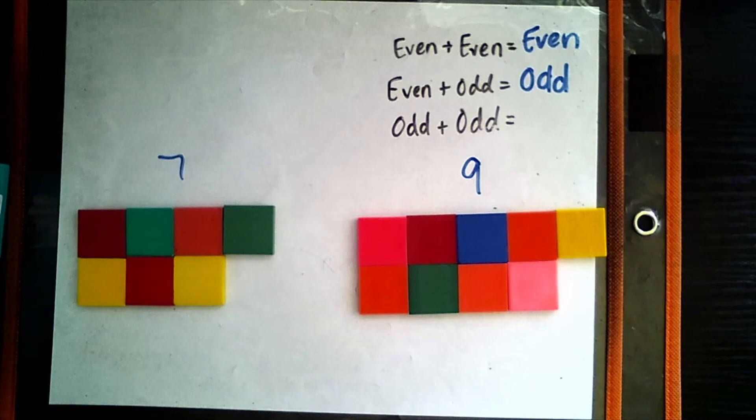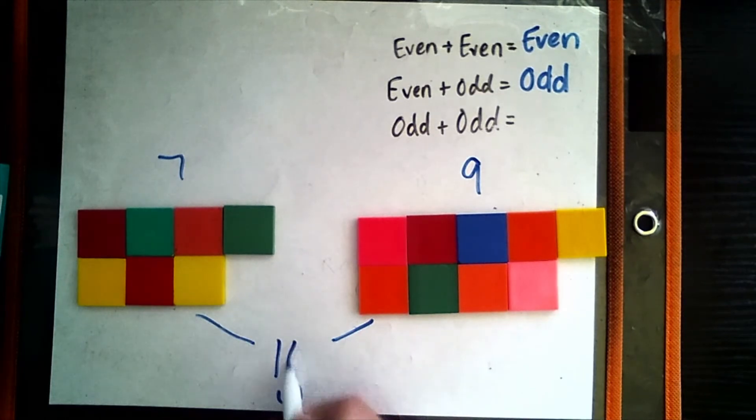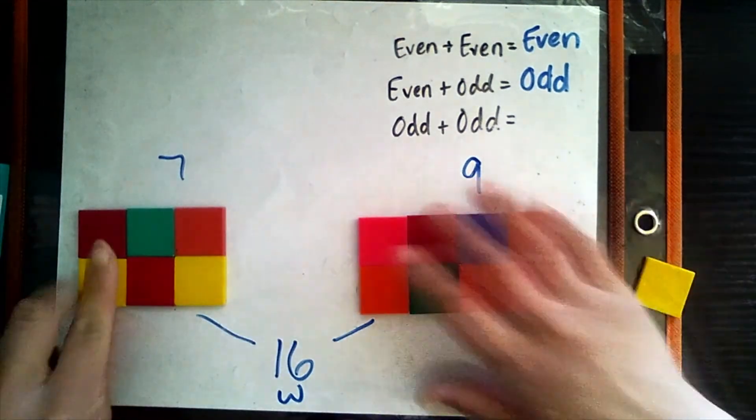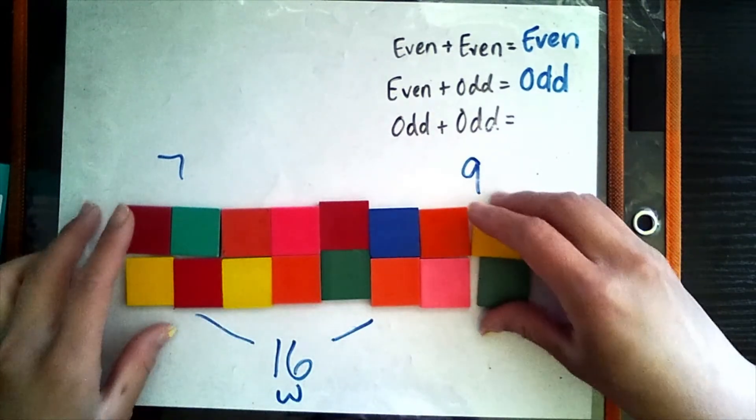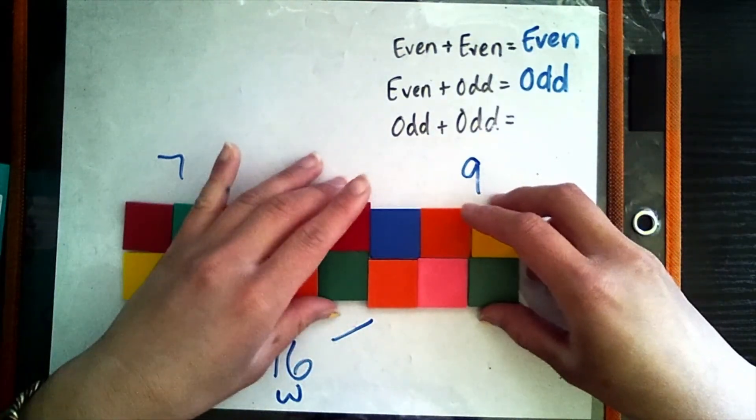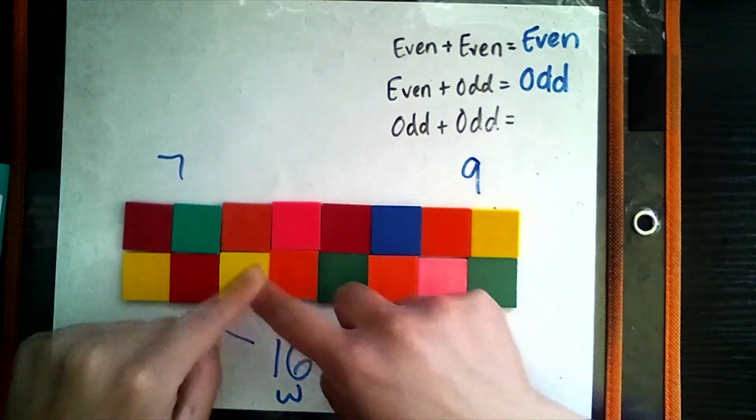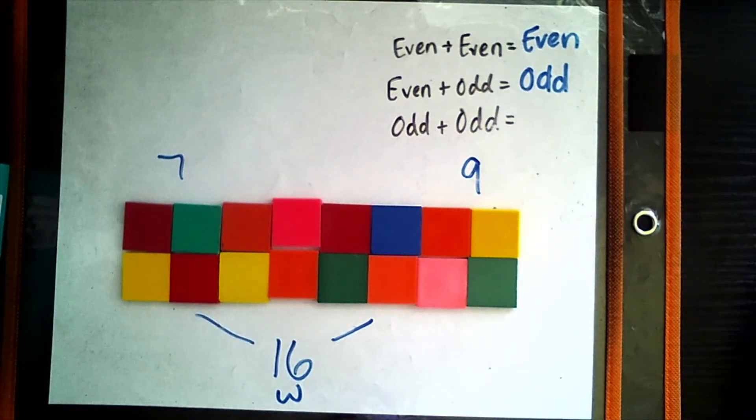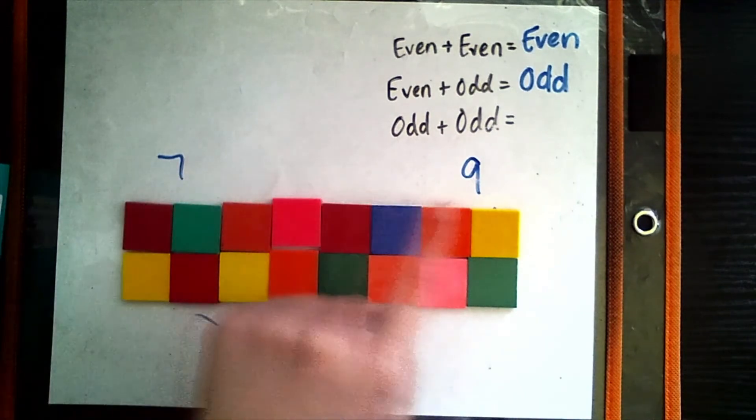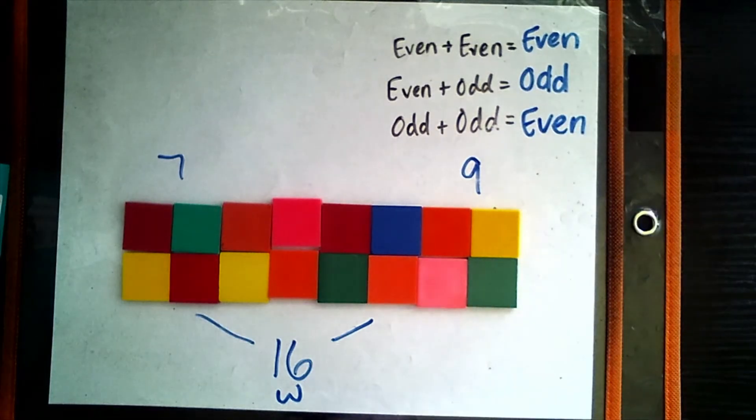So we have an odd number, odd number. What's our whole amount? 16. And is 16 even or odd? 16 is even because, watch, 16 is even because I can make two equal groups. My first group is my first row and my second group is my second row. And each square has a partner. So we figured out that an odd number plus an odd number gives us an even whole or an even number.